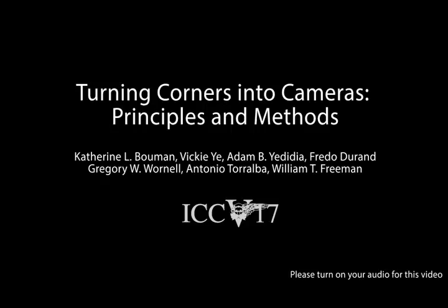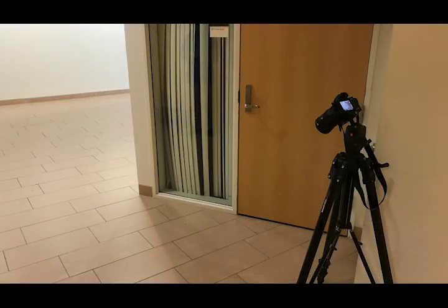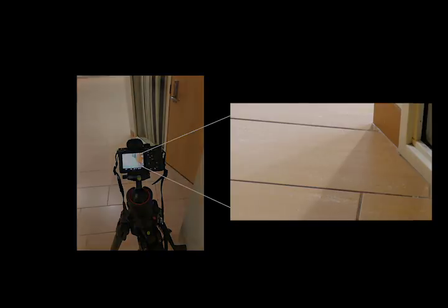The light that we see comes from many different sources, including objects that aren't directly visible to us. For instance, imagine looking at a corner at the base of a wall's edge. Although the wall prevents you from seeing the scene to the right of the corner, you may notice a gradient of light on the ground. This gradient is called a penumbra.